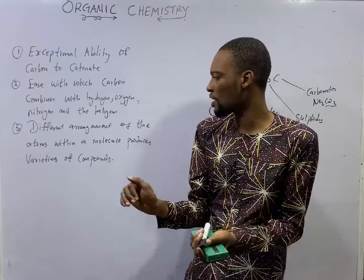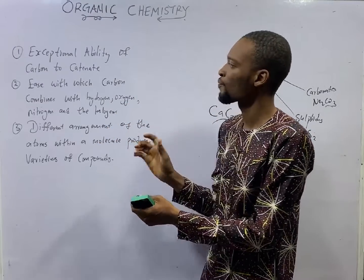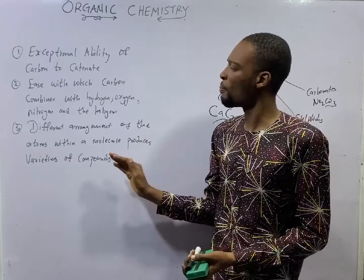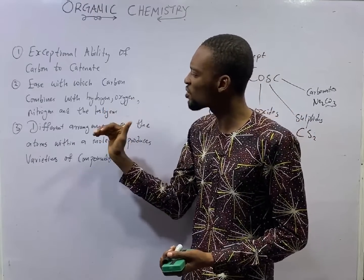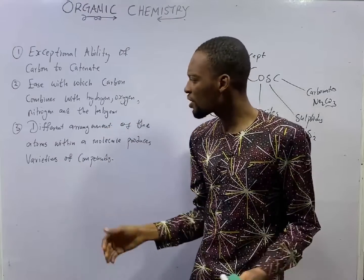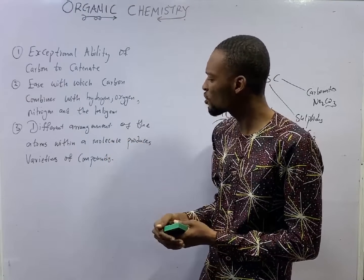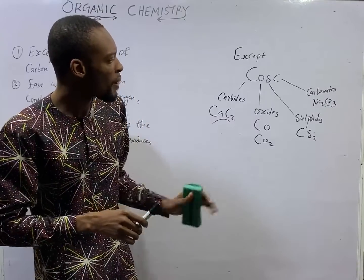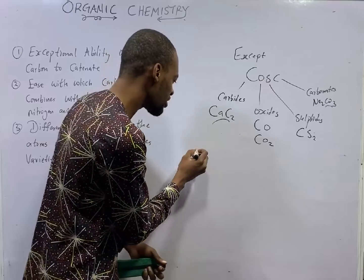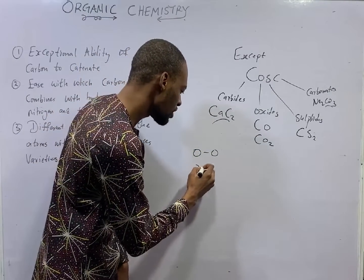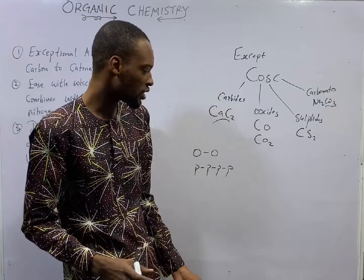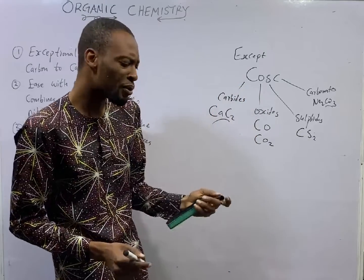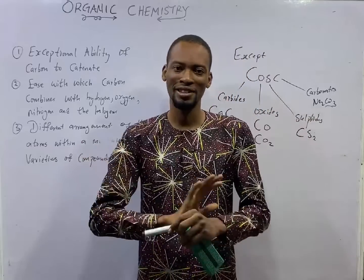The reasons we have so many organic compounds are summarized as follows. First, the exceptional ability of carbon to catenate. Second, the ease with which carbon combines with hydrogen, oxygen, nitrogen, and the halogens. Third, different arrangements of atoms in a molecule produce varieties of compounds. Now, apart from carbon, other elements like oxygen and phosphorus can also catenate, but carbon is exceptional — carbon is the best catenator, so there is no competition.